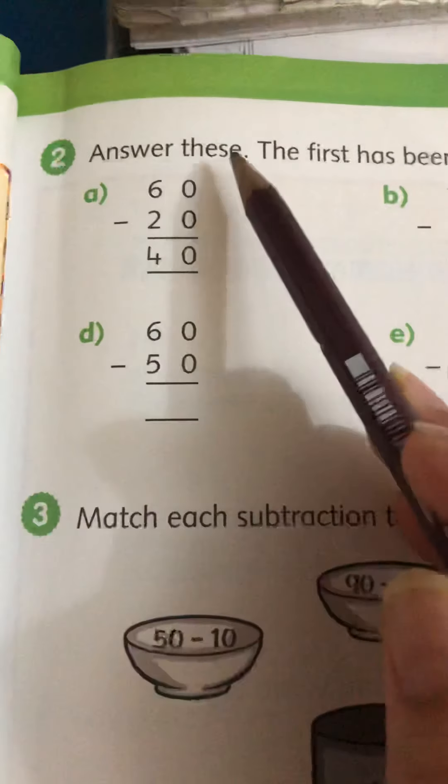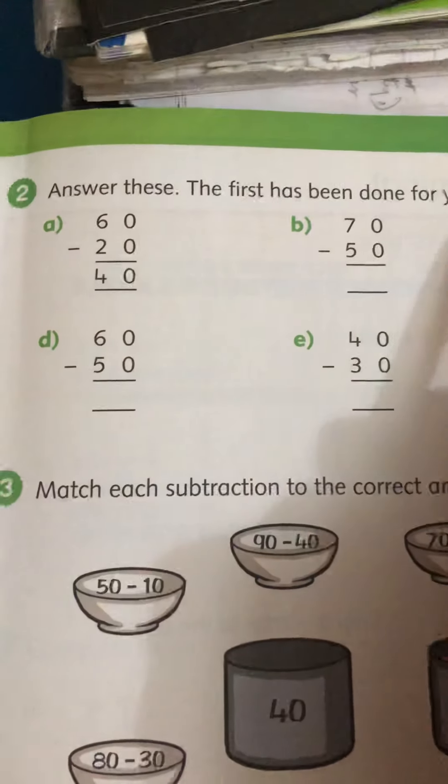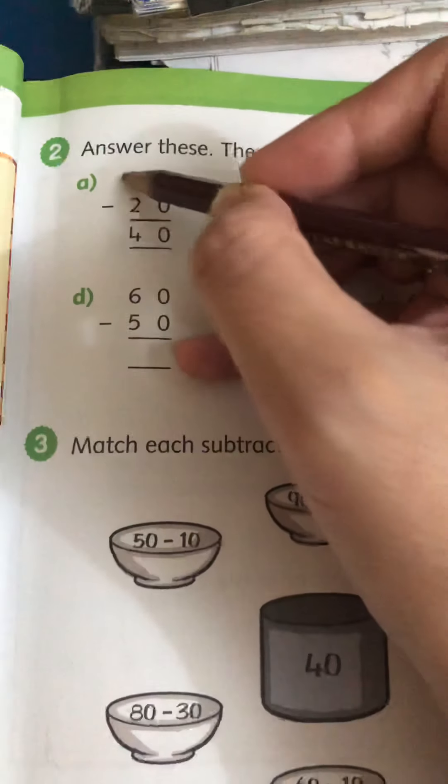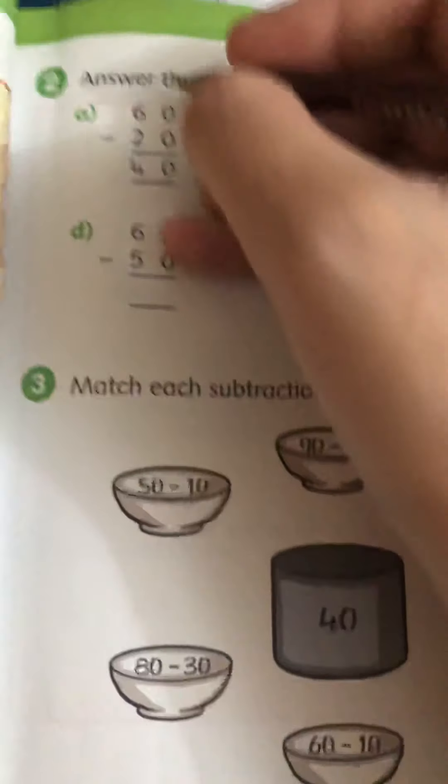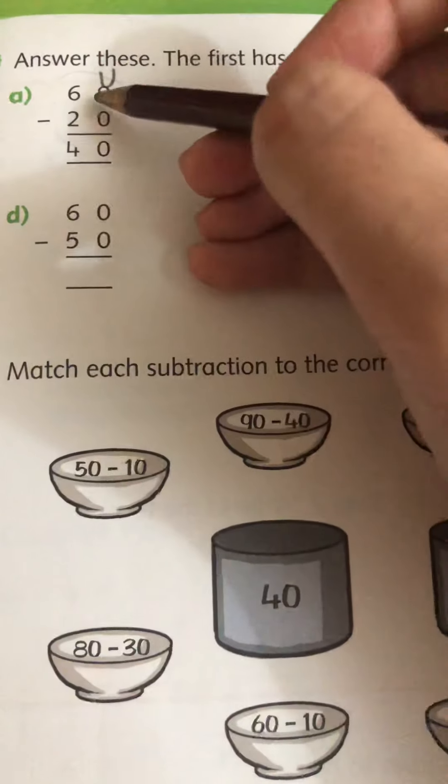Now question number 2. Answer these. The first has been done for you. Right. So when the sum is written in vertical form, it's easier if we divide them. Like if we write U, unit on the left side. In maths, we start from the left side.